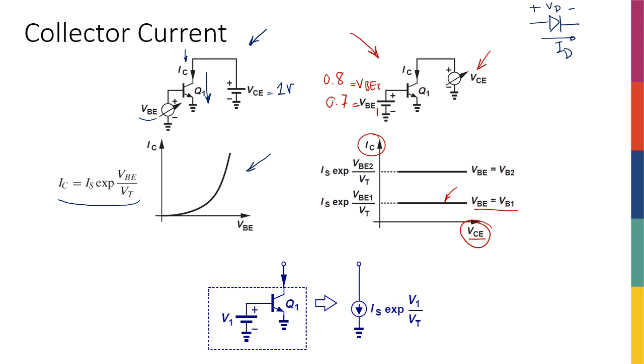Okay, so this is for 0.7, this is for 0.8, but this plot is telling me that as long as I keep my VBE constant, VCE has no say in the current of the collector, right? So the voltage across the collector emitter is not really affecting the current between collector and emitter, the current that is flowing through the collector. So this is very interesting.